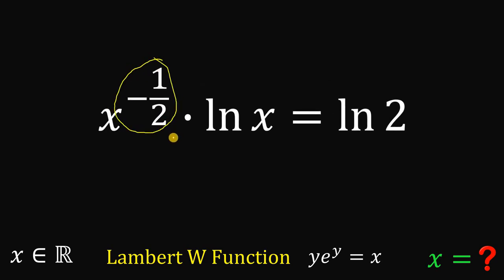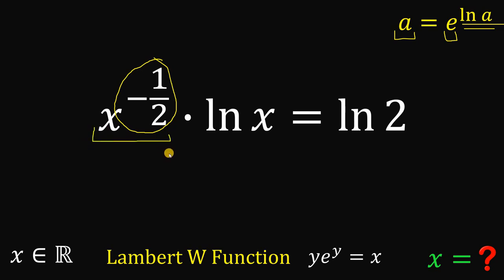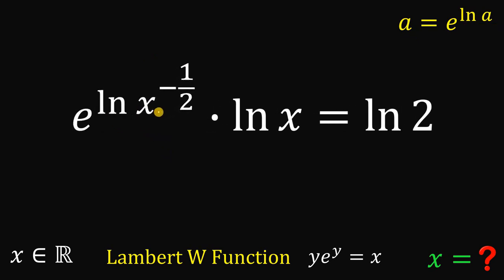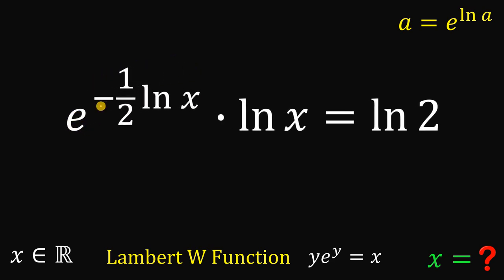Now let's use this identity: any value a can be written as e^(ln a). So x^(−1/2) can be written as e raised to the power of ln(x^(−1/2)). Moving the exponent −1/2 to the front, this simplifies to: e^((−1/2)·ln x) · ln(x) = ln(2).